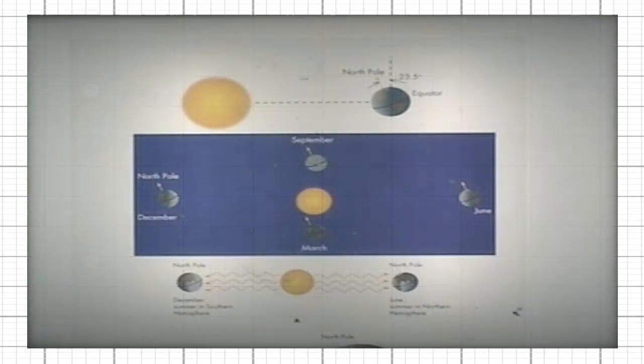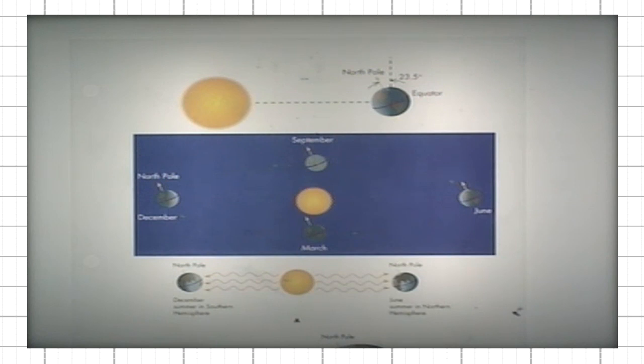First of all, the temperature on Earth is determined by the amount of energy that we receive from the sun. The sun is the sole source of energy required for life on Earth.